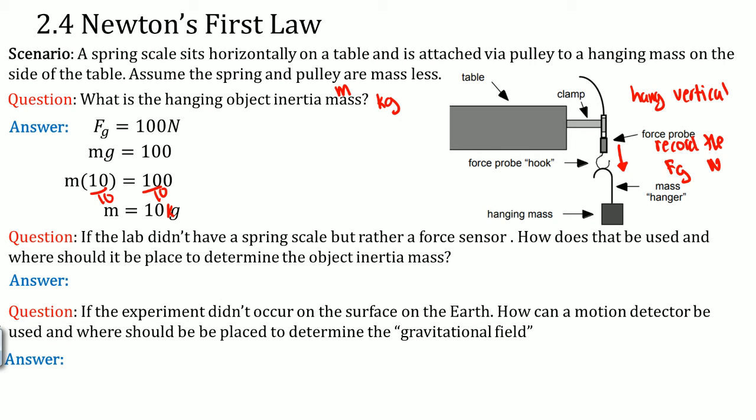The last question: If the experiment didn't occur on the surface of Earth, how can a motion detector be used and where should it be placed to determine the gravitational field? To find the gravitational field, which is g, the object has to be in free fall.